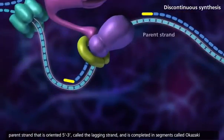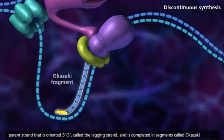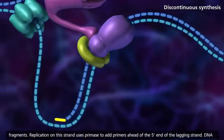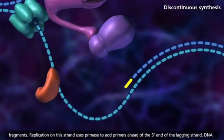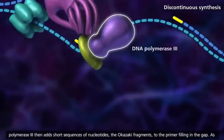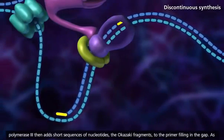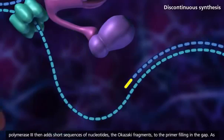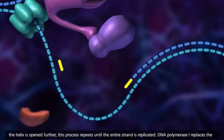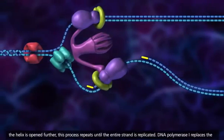Discontinuous synthesis occurs on the parent strand that is oriented 5' to 3' called the lagging strand, and is completed in segments called Okazaki fragments. Replication on this strand uses primase to add primers ahead of the 5' end of the lagging strand. DNA polymerase 3 then adds short sequences of nucleotides, the Okazaki fragments, to the primer filling in the gap. As the helix is opened further, this process repeats until the entire strand is replicated.